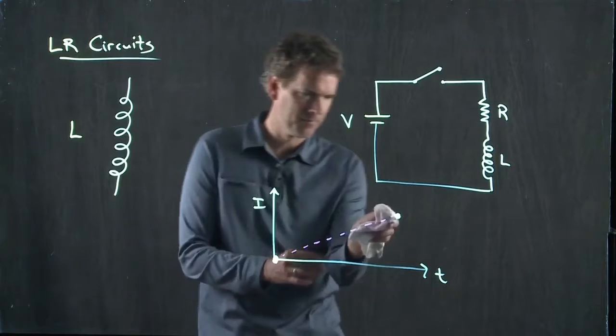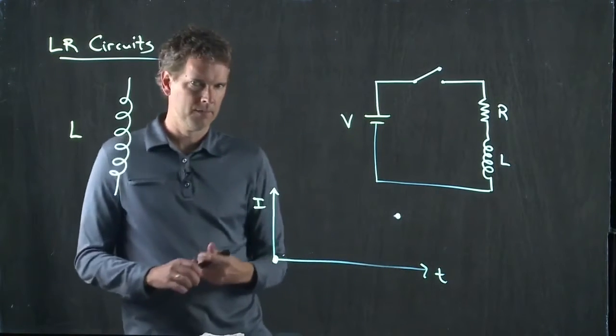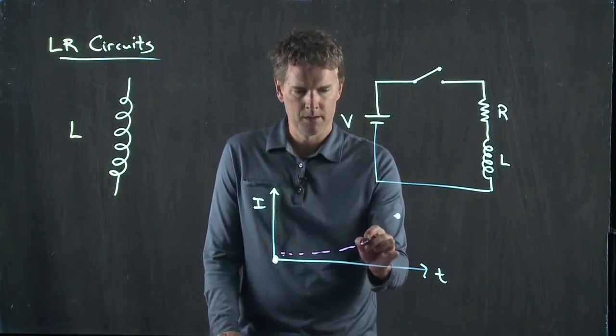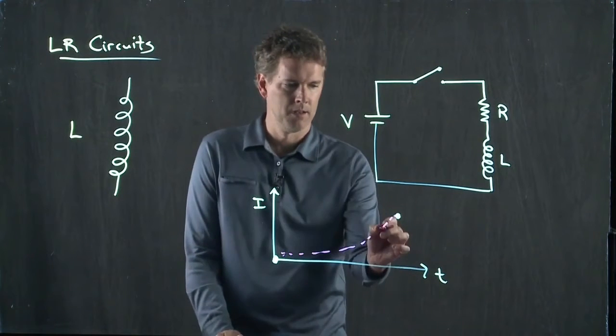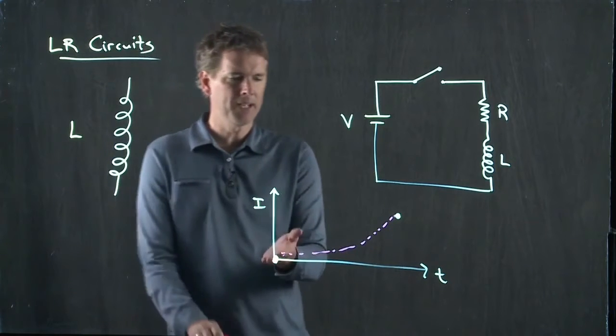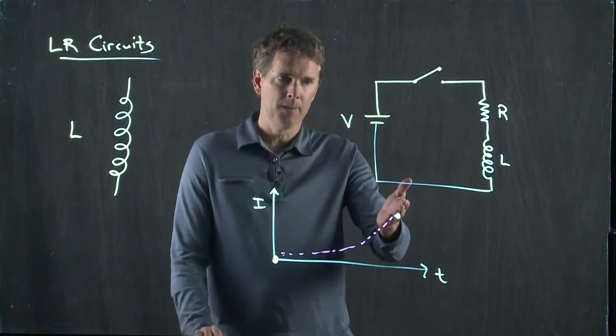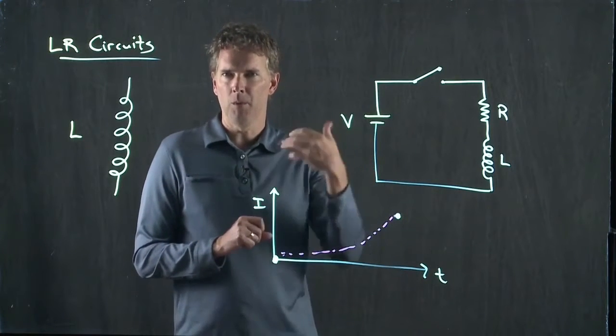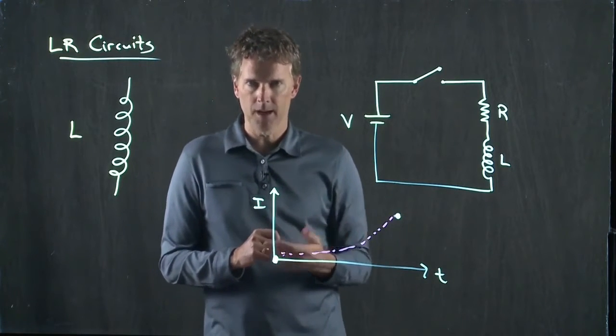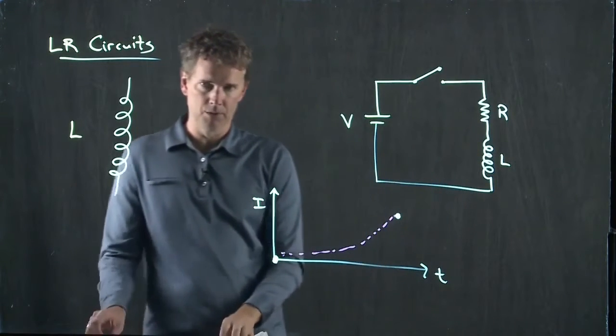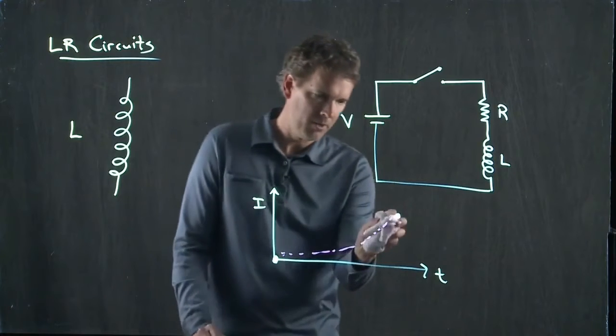Okay? So we're going to erase that one. What about a curve that goes like this? We don't like that one very much either because, again, as time goes on, it says the current should just keep going up and up and up. But we know that can't be the case, right? Ultimately, that resistor is going to limit how much current can go through that system. So we don't like that one either.